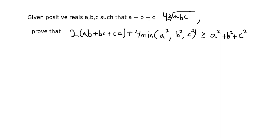We're given positive real numbers a, b, and c such that a plus b plus c is equal to 4 times the cube root of abc. We want to prove that 2 times ab plus bc plus ca, plus 4 times the minimum of a squared, b squared, and c squared, is greater than or equal to a squared plus b squared plus c squared.